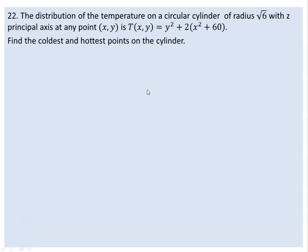Let's get started. The problem is that we need to find the maximum and minimum temperature distribution on a circular cylinder. The cylinder has radius radical 6, with the z-axis as its principal axis. The equation is x squared plus y squared equals radical 6 squared. So, the question is to find the coldest and the hottest points on the cylinder.